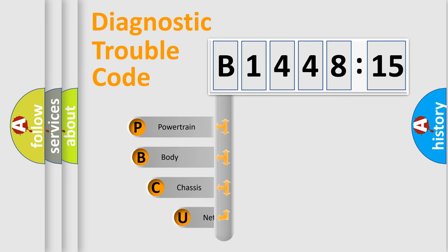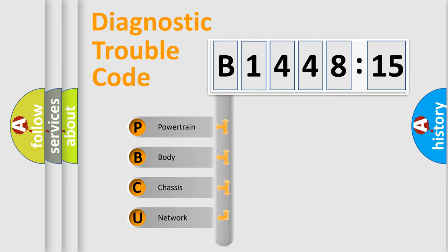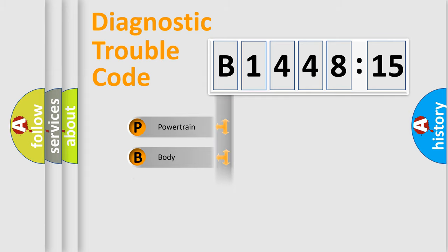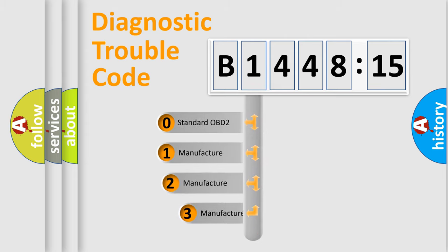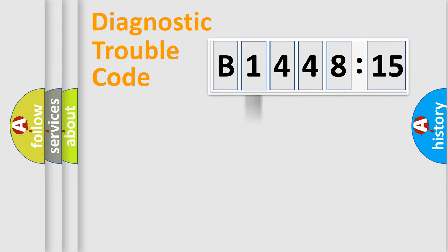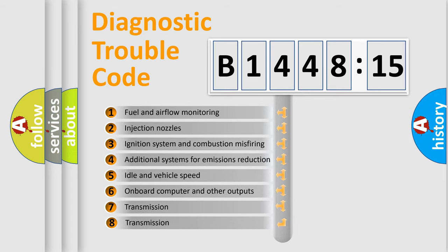First, let's look at the history of diagnostic fault code composition according to the OBD2 protocol, which is unified for all automakers since 2000. We divide the electric system of the automobile into four basic units: Powertrain, Body, Chassis, and Network. This distribution is defined in the first character of the code. If the second character is zero, it is a standardized error. In the case of numbers 1, 2, or 3, it is a more specific expression of a car-specific error.